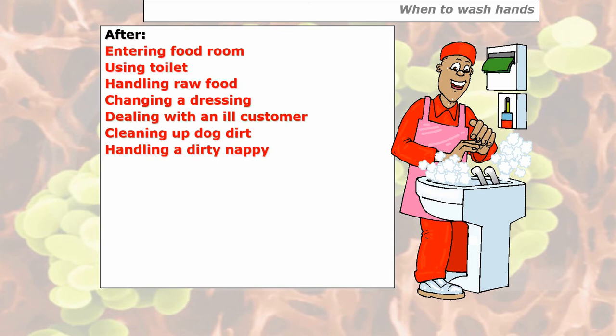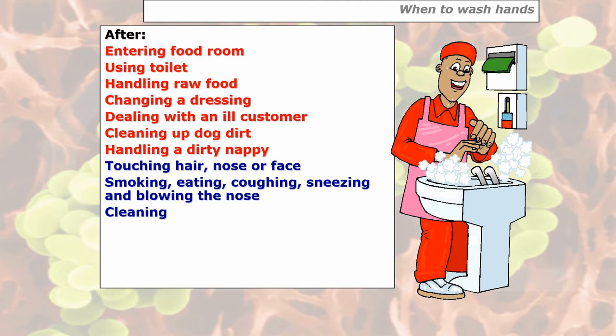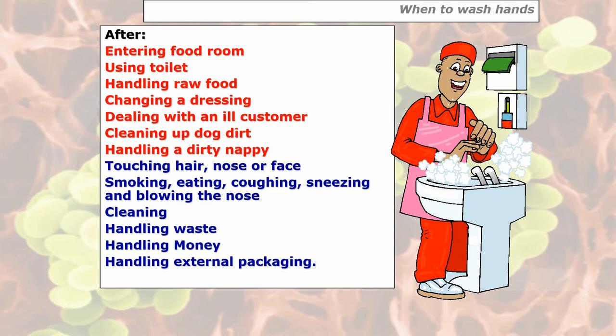Other times when you should wash your hands — not a double wash priority, but certainly wash them once — include: touching hair, nose or face; smoking, eating, coughing, sneezing or blowing your nose; cleaning; handling waste material; handling money; and handling external packaging. These are not as important as the priority areas, but you still need to wash your hands after engaging in any of these.